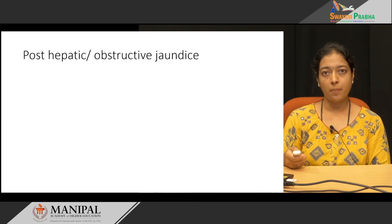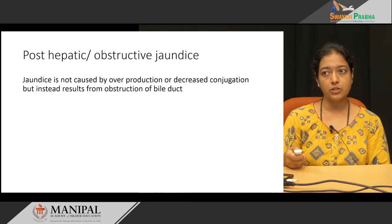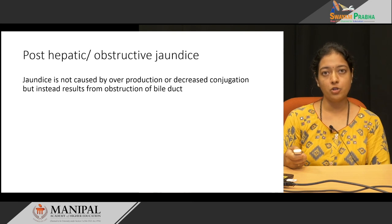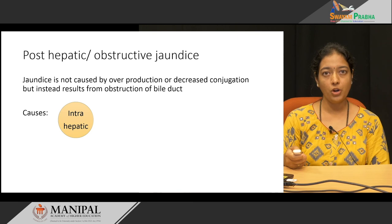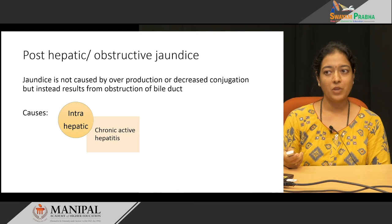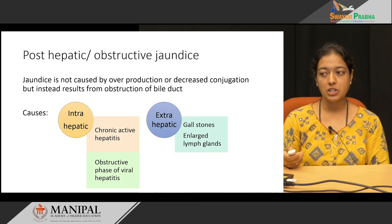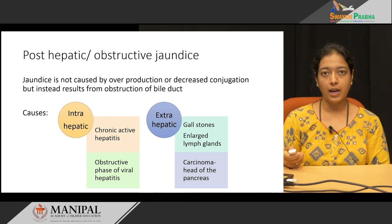The last type is post-hepatic or obstructive jaundice. In this jaundice, it is not because of overproduction or decreased conjugation, but due to obstruction of the bile duct. This obstruction can be classified into intrahepatic obstruction — such as chronic active hepatitis or obstructive phase of viral hepatitis — or extrahepatic obstruction, such as gallstones, enlarged lymph nodes obstructing the bile passage, or carcinoma of the head of the pancreas obstructing the bile duct.